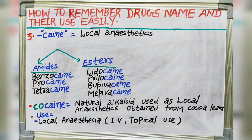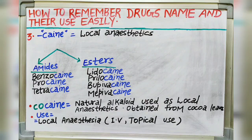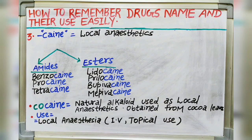Third suffix is -caine, C-A-I-N-E. It indicates local anesthetics. It has two categories: amide derivatives and ester derivatives. Amide derivative drugs include benzocaine, procaine, tetracaine; and ester derivative drugs include lidocaine, prilocaine, bupivacaine and mepivacaine.